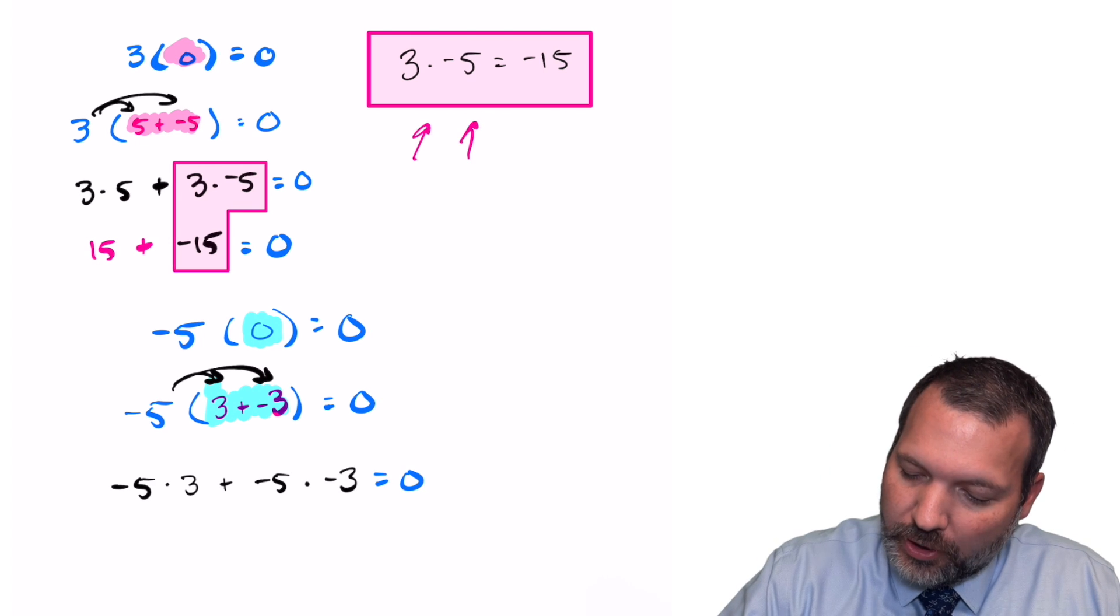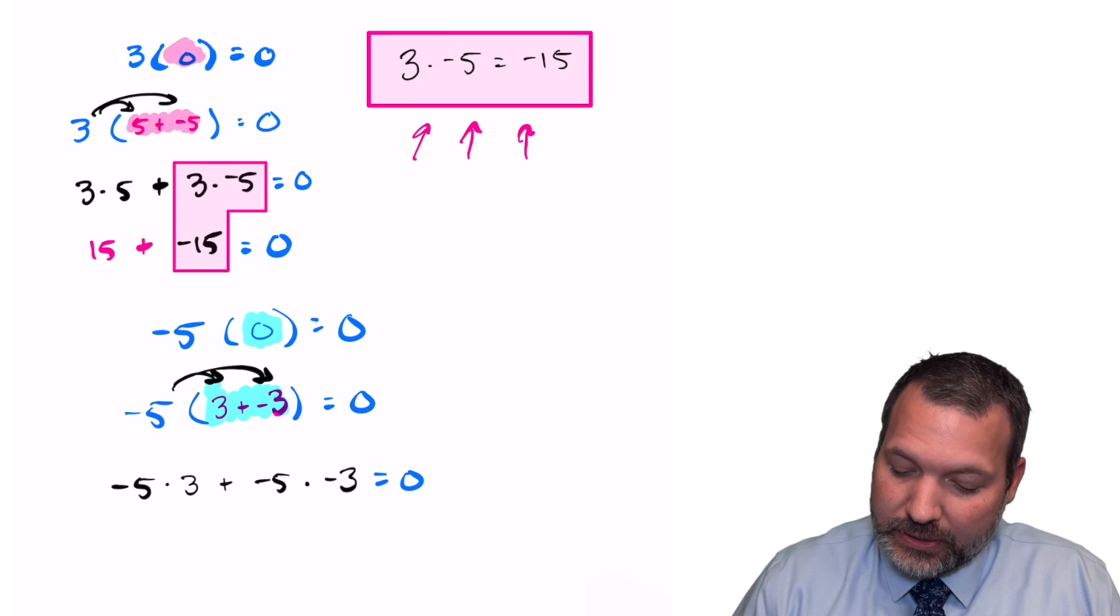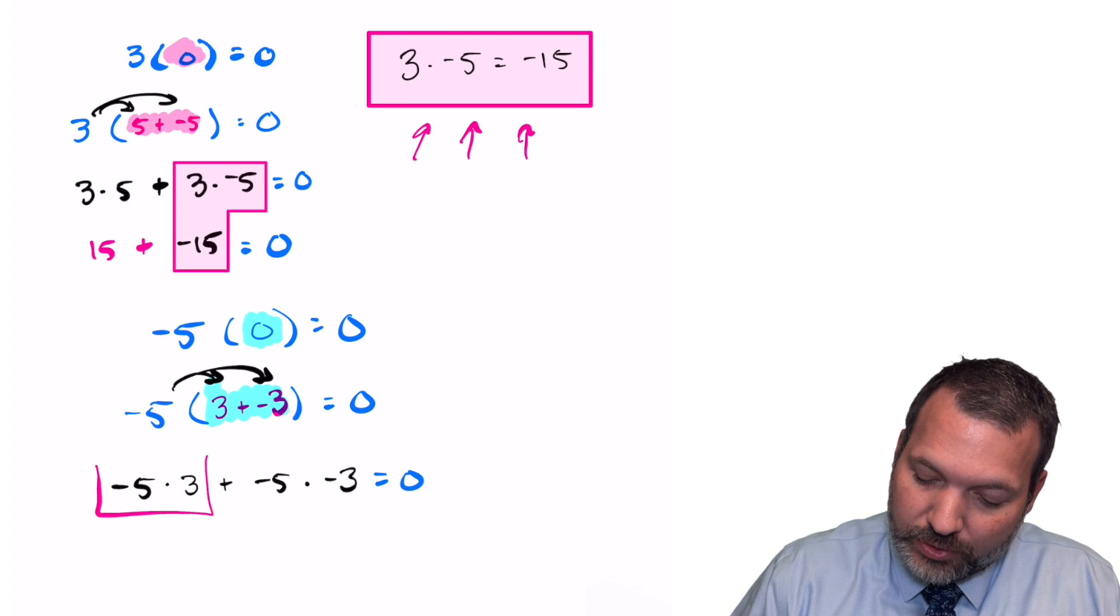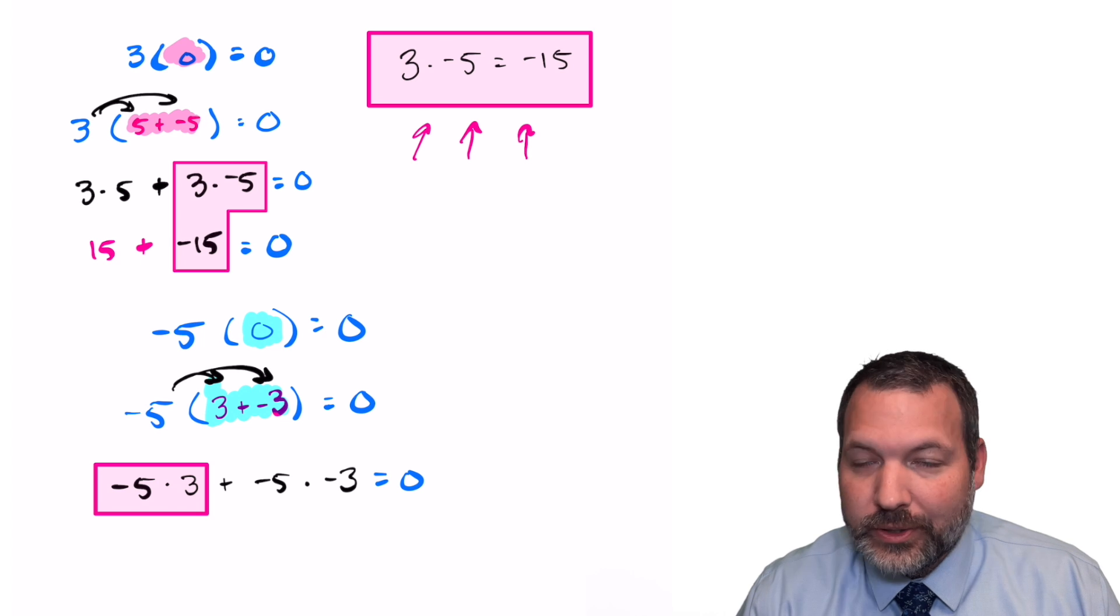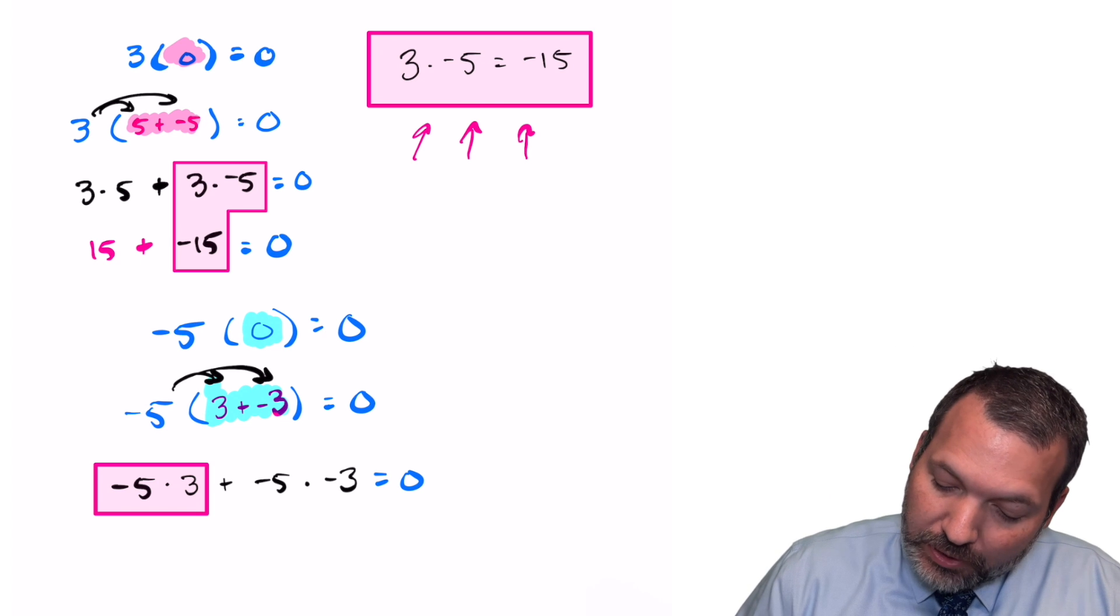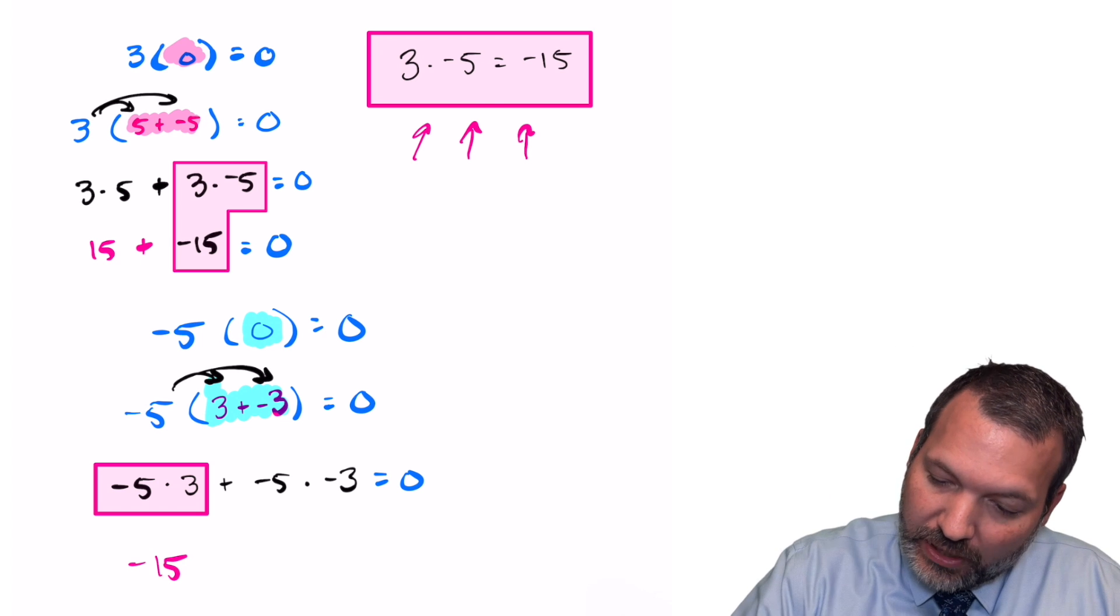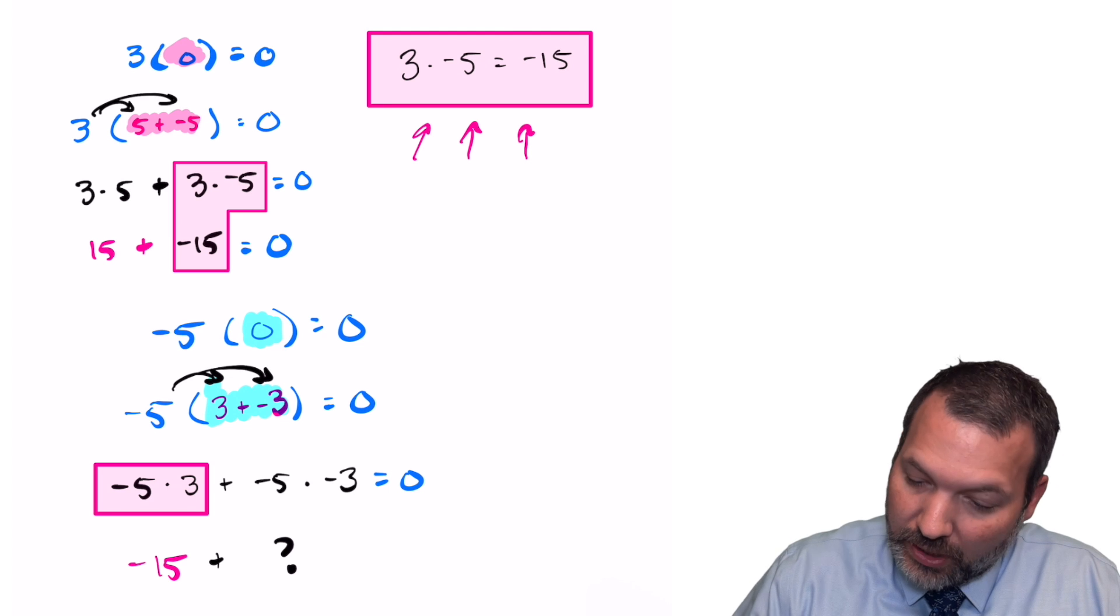Now we just figured out a moment ago, here's our special box, that negative five times three is the same thing as negative 15. Multiplication is commutative, so we're allowed to flip that around. And so this must be negative 15 plus something, let's say we don't know what it is,